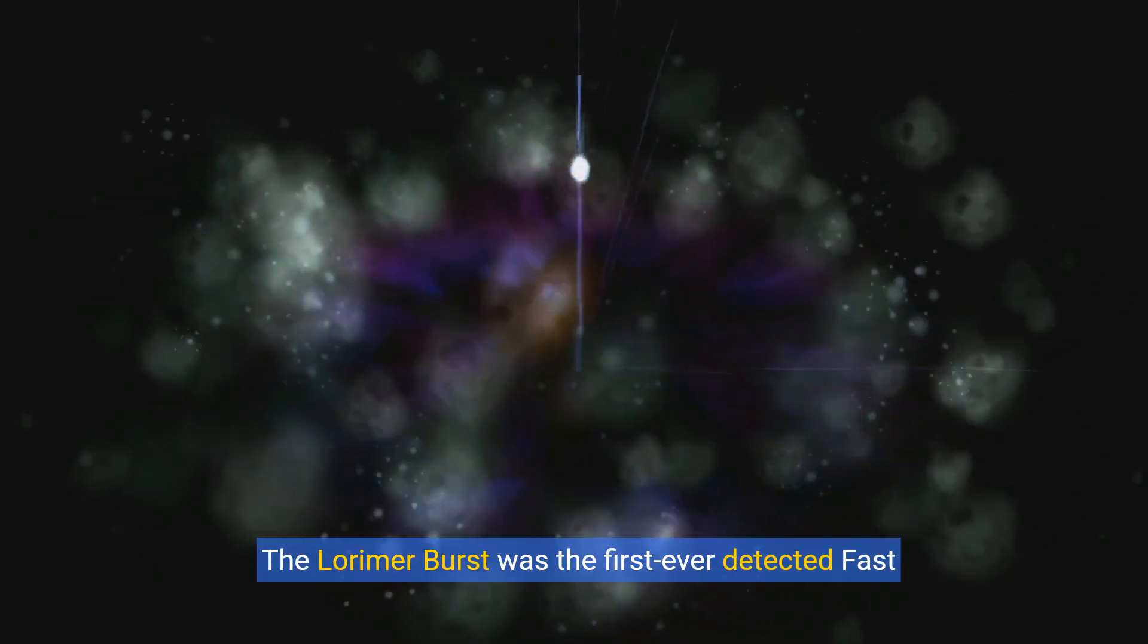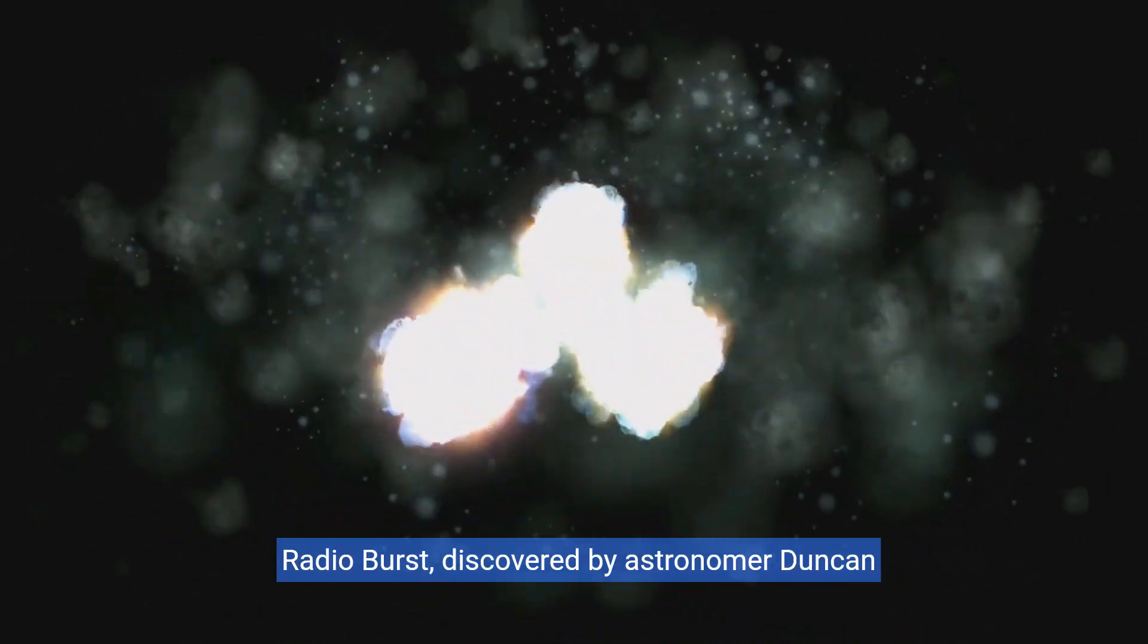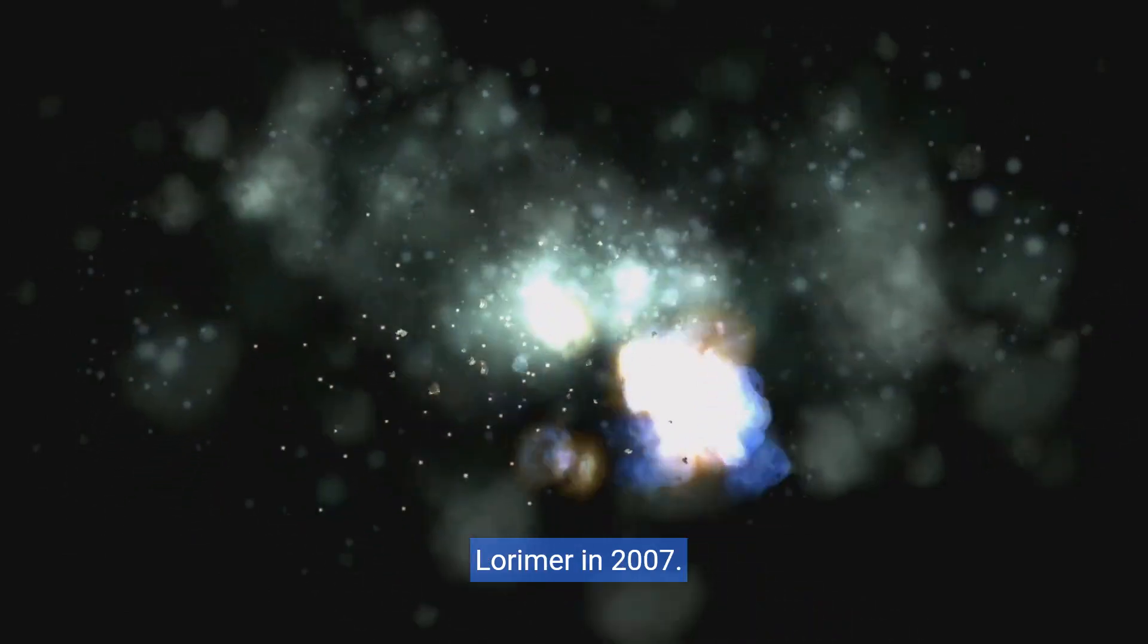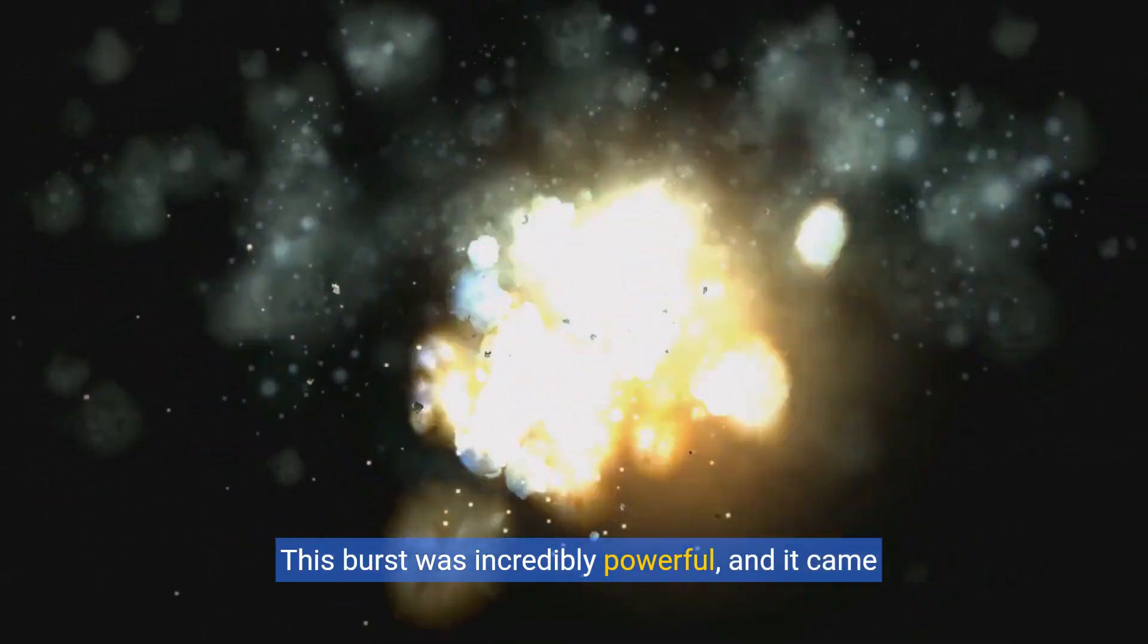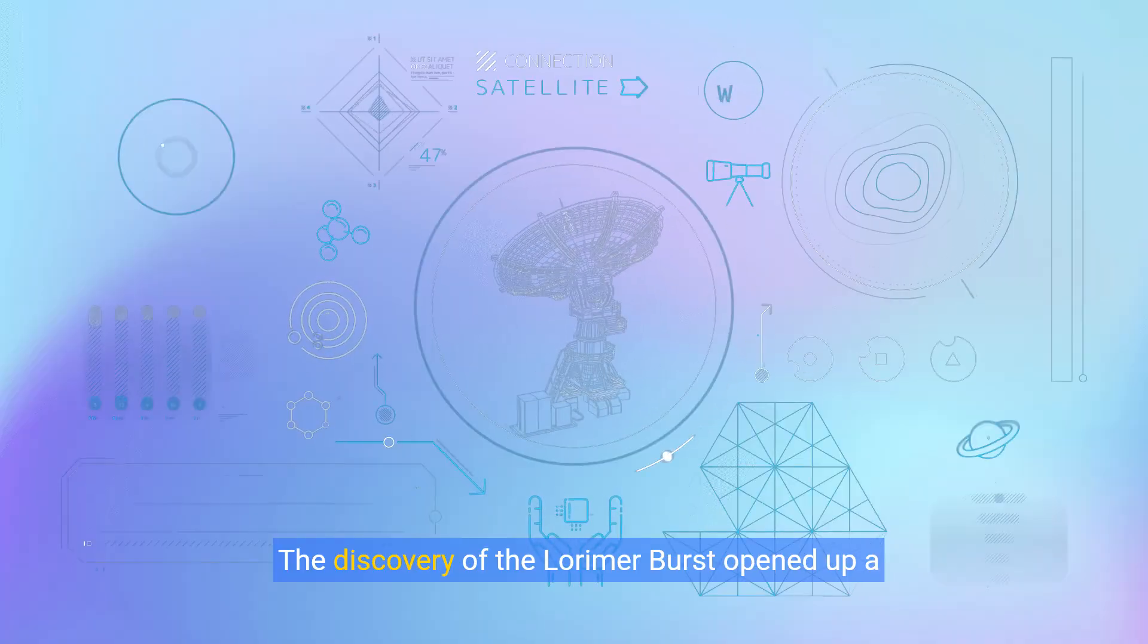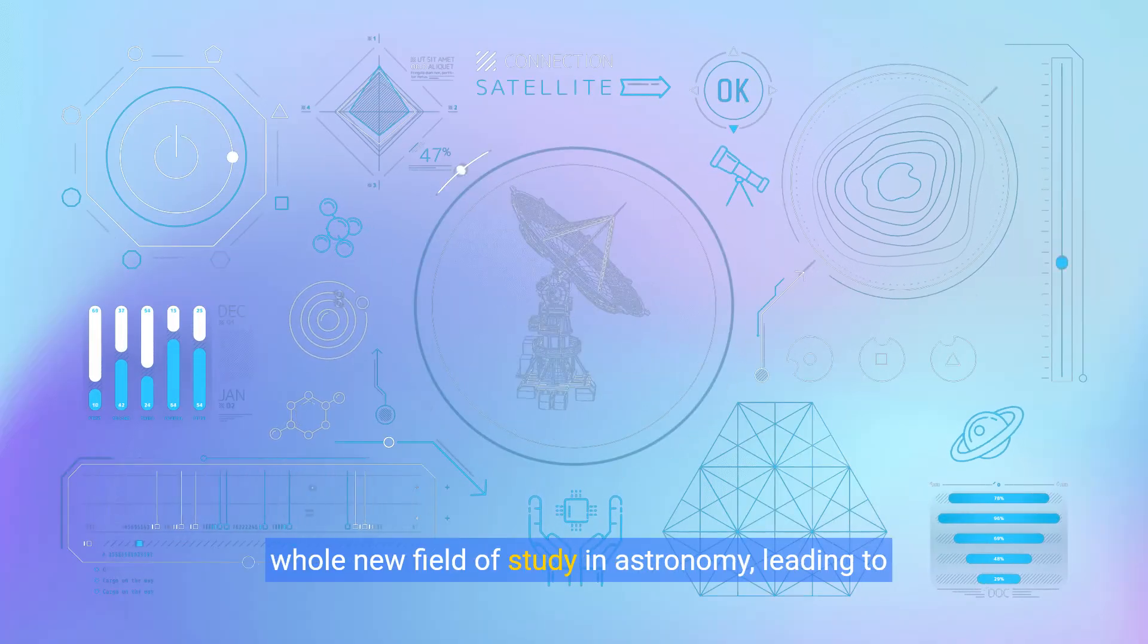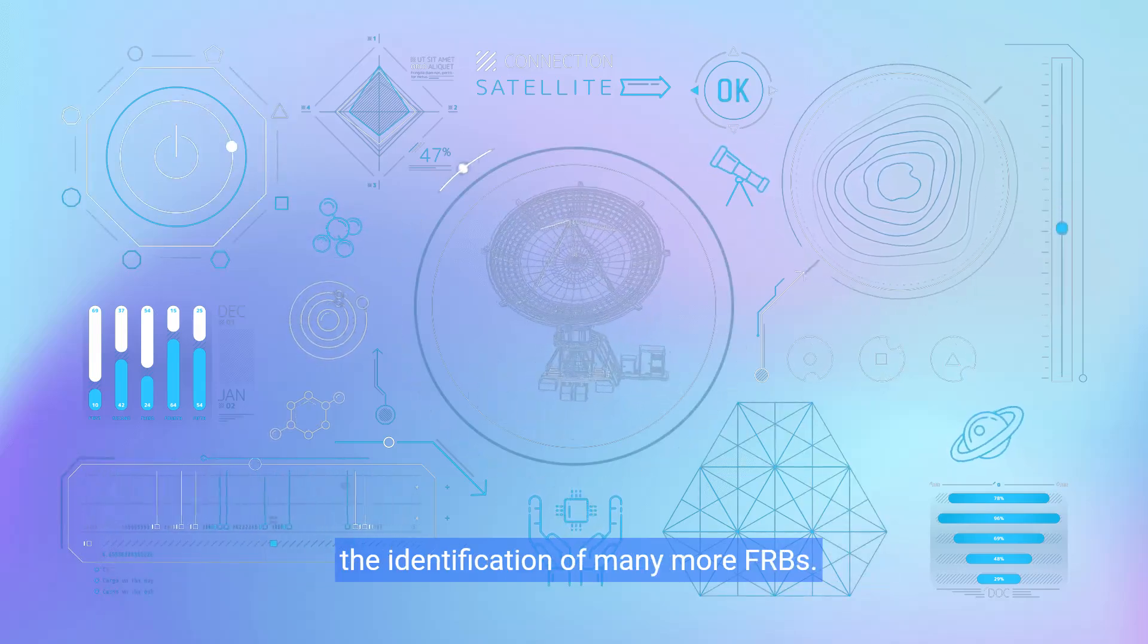The Lorimer Burst. The Lorimer Burst was the first ever detected fast radio burst, discovered by astronomer Duncan Lorimer in 2007. This burst was incredibly powerful, and it came from a distant part of the universe. The discovery of the Lorimer Burst opened up a whole new field of study in astronomy, leading to the identification of many more FRBs.